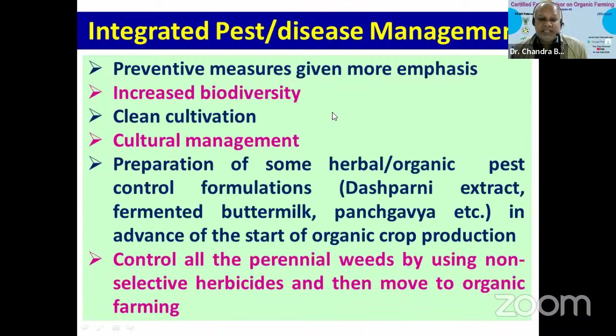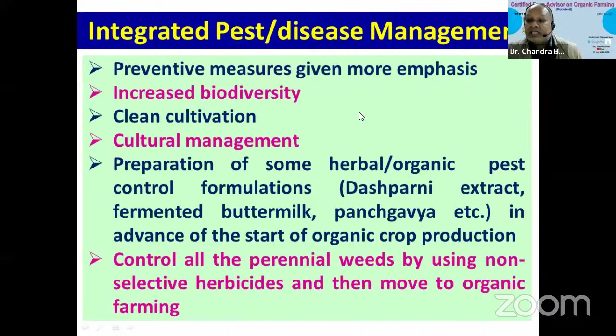Clean cultivation means removal and destruction of all kinds of weeds, which harbor different pests and diseases and help in transmission of several virus diseases. Destruction of all crop residues infested or infected by a particular disease or insect pest is also part of clean cultivation. If you destroy stubbles infested with disease parts or insect stages, it will check the life cycle of different pests and pathogens.